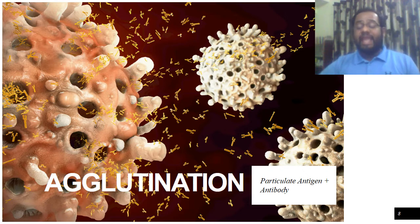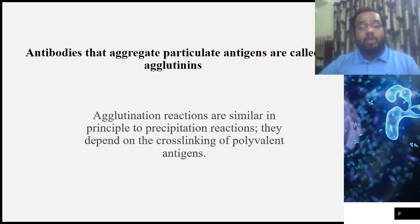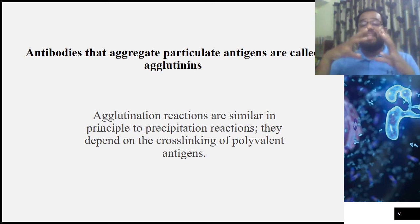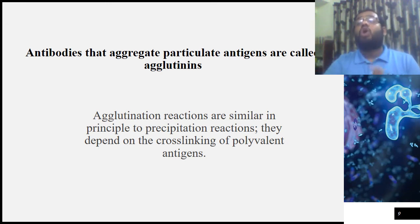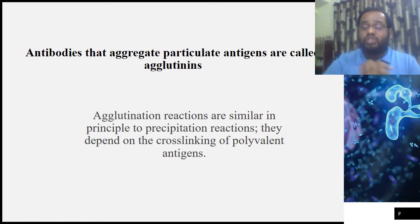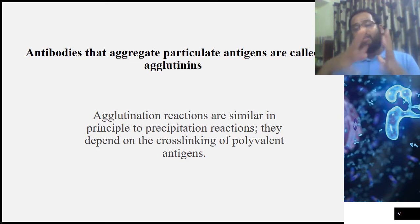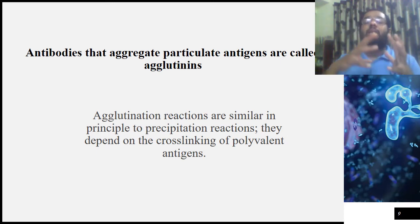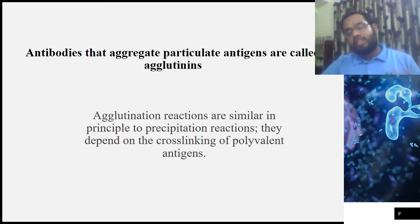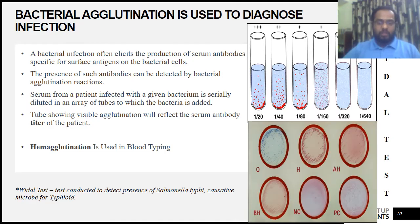Now we move to agglutination reactions. The principle is the same as immunoprecipitation, with one key difference: here the antigen is of particulate nature rather than soluble nature. The antibodies that aggregate particulate antigens are called agglutinins. Everything else — cross-linking requirements, bivalency — remains the same as in precipitation-based assays.